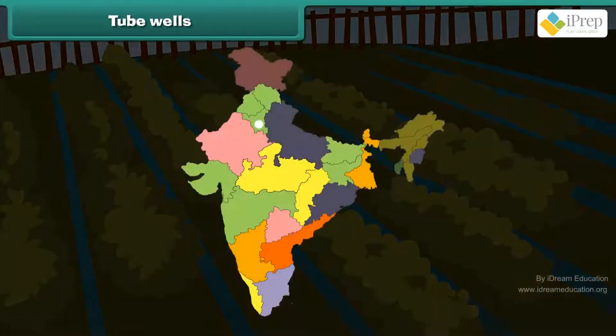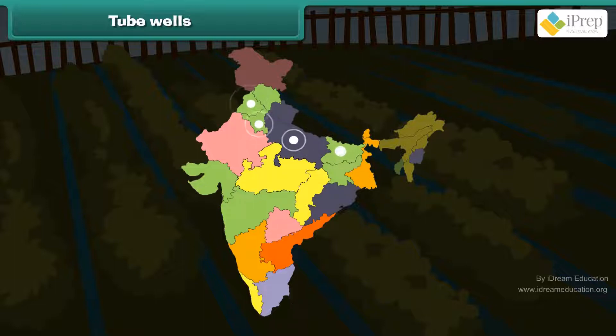In Haryana, Uttar Pradesh, Punjab and Bihar states, tube well irrigation is extensively in practice.